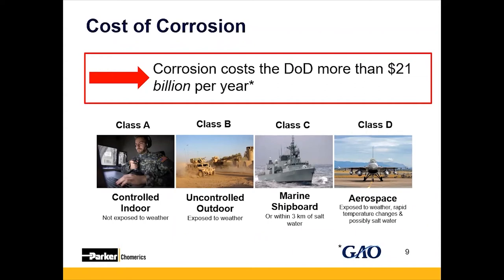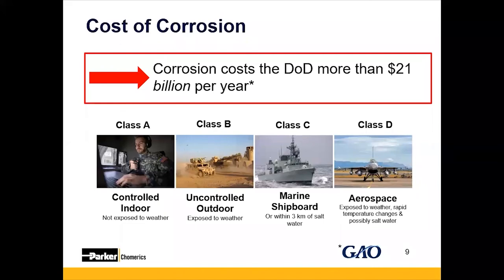Class B involves an uncontrolled outdoor environment — exposed applications such as automotive, outdoor telecom, industrial, and in defense and aerospace, ground vehicles and shelters. When it gets to Class C and D, that's where you really need to account for material choices to minimize galvanic corrosion. The presence of salt fog in marine applications or constant exposure to weather and rapid temperature changes in aerospace will speed up galvanic corrosion and create significant cost.